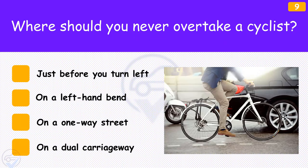Where should you never overtake a cyclist? The answer is 'Just before you turn left'. If you want to turn left and there's a cyclist in front of you, hold back and wait until the cyclist has passed the junction, then turn left behind them. Don't try to intimidate them by driving too closely.